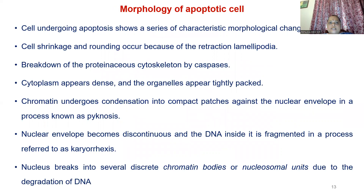Cells undergoing apoptosis show characteristic morphological changes. We can find cell shrinkage, and protein cytoskeleton changes. The cytoplasm appears dense and the organelles appear tightly packed. Chromatin undergoes condensation into compact patches against the nuclear envelope in a process known as pyknosis. The nuclear envelope becomes discontinuous and the DNA inside the cell fragments in a process referred to as karyorrhexis. Nuclear breakage and chromatin bodies of nucleosomal units occur, indicating DNA degradation.